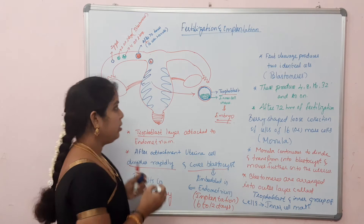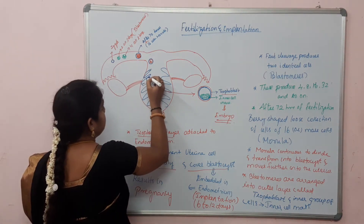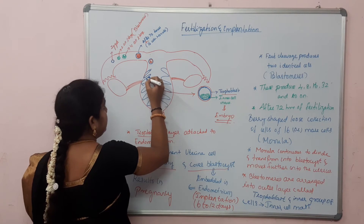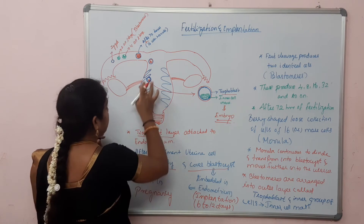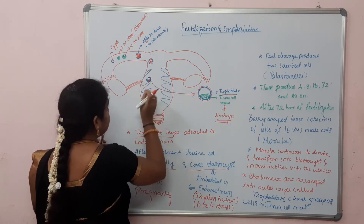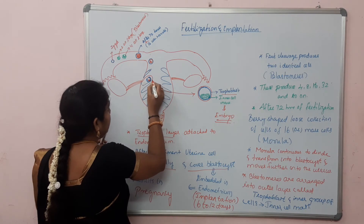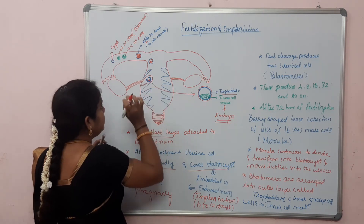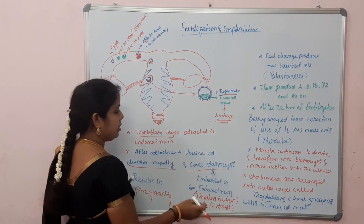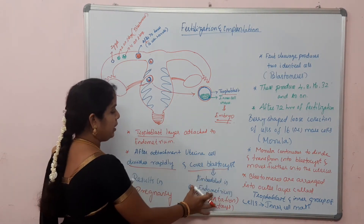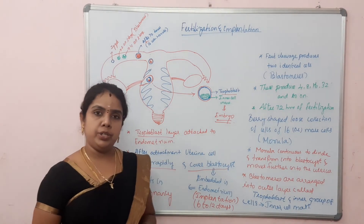We can see here: the trophoblast is the flattened outer layer, and the inner cell mass is also present. After attachment, the uterine wall divides rapidly and covers this full structure. The blastocyst is now completely embedded in the endometrium, and this process is called implantation.